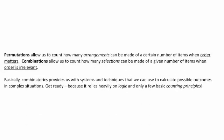What are permutations? Permutations allow us to count how many arrangements can be made of a certain number of items when order matters. So with a permutation, order is important. For example, a time when order is important is when you're forming postal codes. N2H-6T8 is a very different postal code than H2N-6T8 because they correspond to different areas of the country. So postal codes are permutations because the order of the letters and numbers is very important.